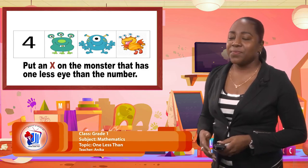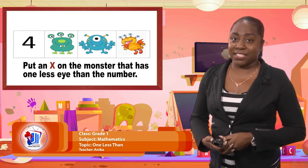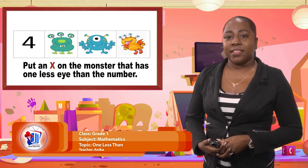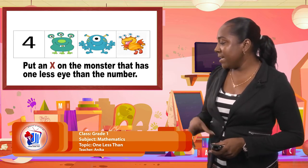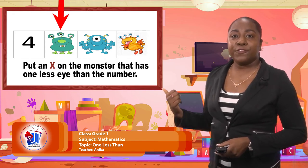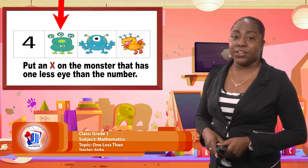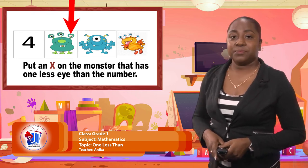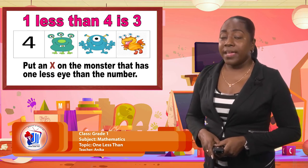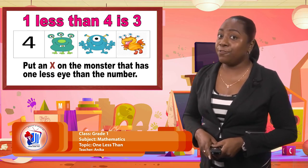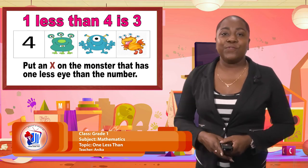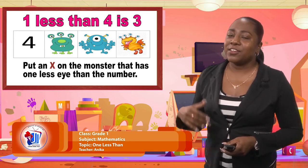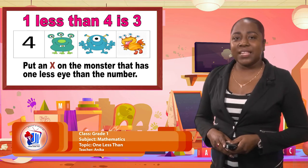Found it? Alright, so let's see if you got that correct. When we look at each of the Munsters we're going to see that the one that has one less than four eyes would be the first one — the Munster with three eyes. One, two, three. One less than four is three. So if you selected the correct Munster you can go ahead and give yourself a star. If not I still have some more that you can practice on.